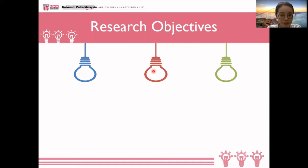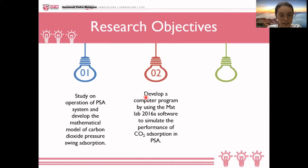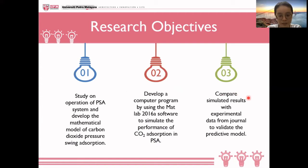Therefore, there are three research objectives for this project. The first one is to study the operation of the PSA system and develop the mathematical model for carbon dioxide pressure swing absorption. The second one is to develop the program using MATLAB software to simulate the performance of carbon dioxide separation by absorption in PSA. And thirdly, to compare simulated results with experimental data from journals to validate the predictive model.